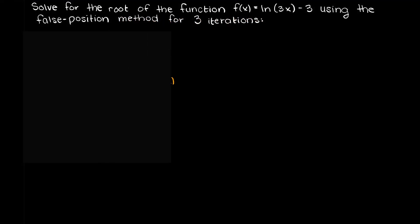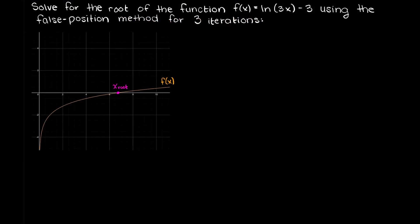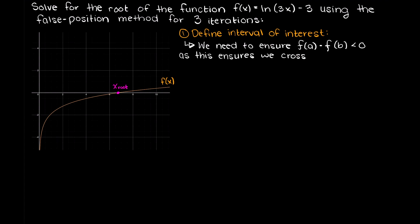Let's first pull up our function so that we know what it looks like. Now, our first step in solving a problem using the false position method is defining our interval of interest. Remember, when defining these two boundaries, we need to ensure that f(a) × f(b) < 0 so there is a single root present between these two boundaries, not zero or multiple roots as I spoke about in a previous video, as this causes us problems.